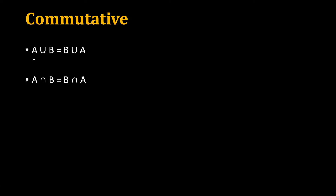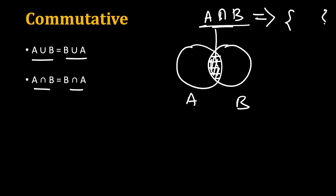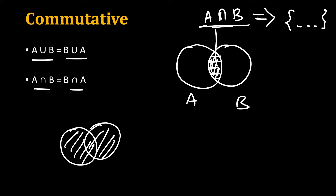The first is the commutative law, which states that A union B is the same as B union A — the order of the union operation does not matter. Similarly for intersection. Pictorially, the common region between A and B is the same regardless of which set we draw first or write first. The intersection evaluates to the set of elements common to both A and B, and the union covers the complete combined region, independent of order.